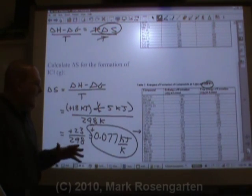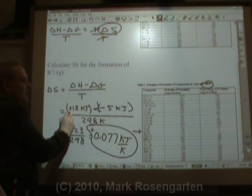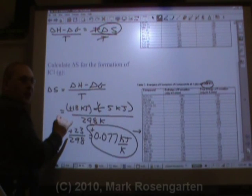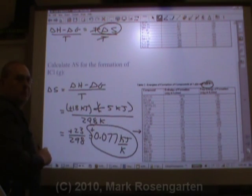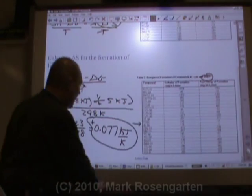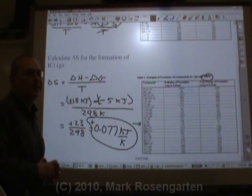So what does that mean? If entropy is favored, but enthalpy delta H is unfavored because it's positive, that means that this reaction will sometimes be spontaneous. And that's how you find the delta S, and you can use that delta S to solve other problems.